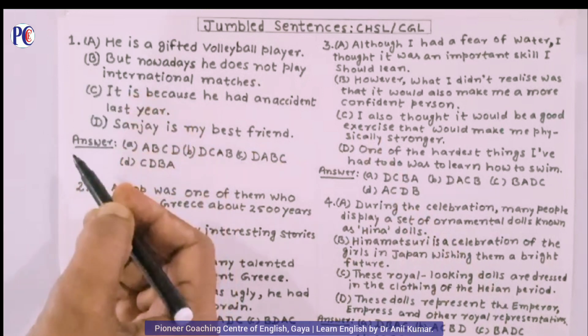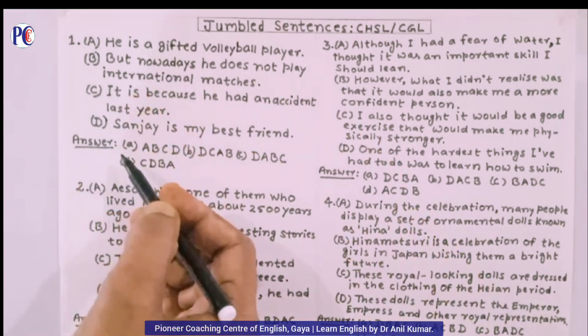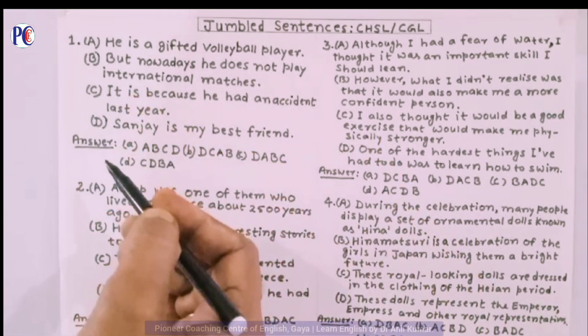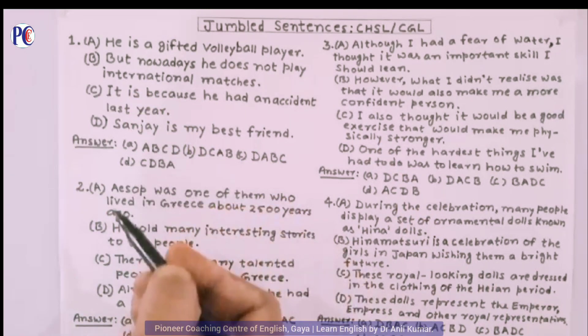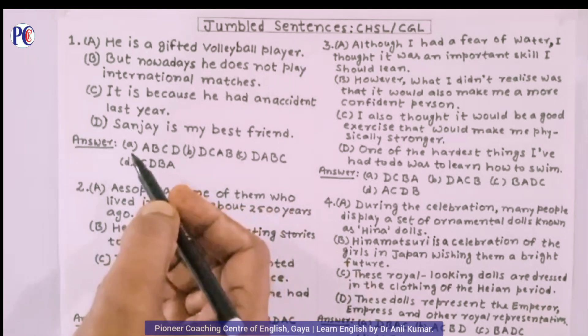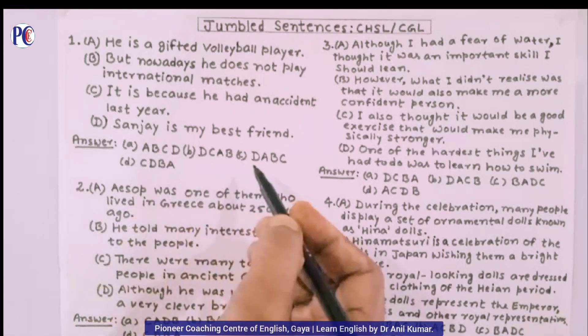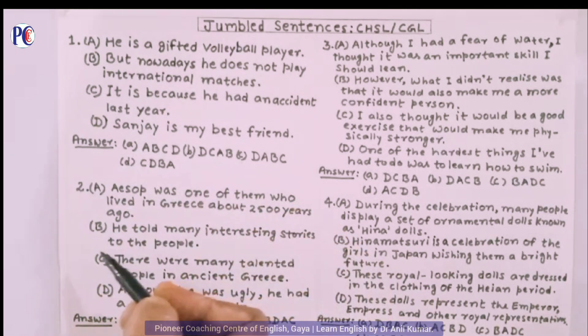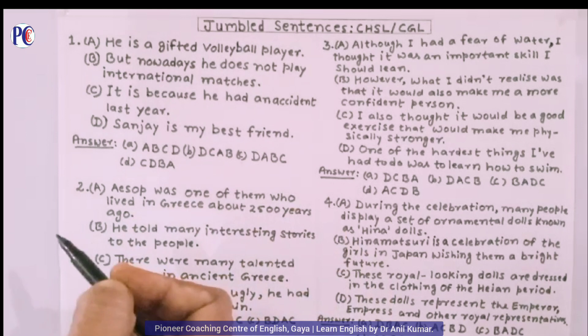Here are four questions of jumble sentences — A, B, C, D — and they have to be arranged in the correct order. This is an easy way to solve them.